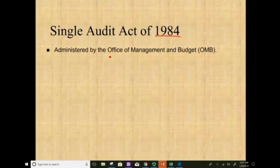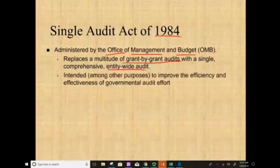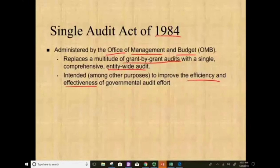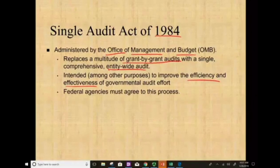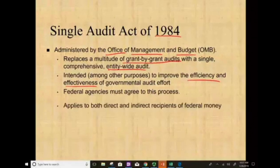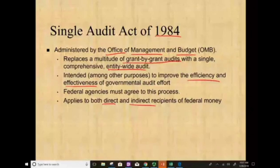The Single Audit of 1984 — what office administered this program? The Office of Management and Budget, or OMB. The purpose is to replace a grant-by-grant audit with a single comprehensive audit, to improve the efficiency and effectiveness of governmental audit effort. Federal agencies must agree to this process. It applies to both direct and indirect recipients of federal money — indirect means you receive money from another government agency that got the money from the federal government.